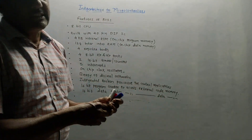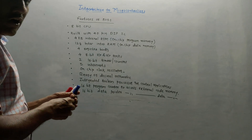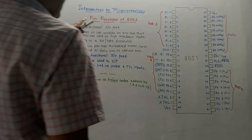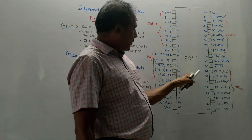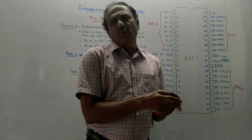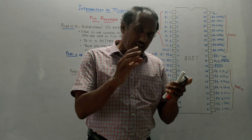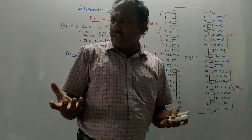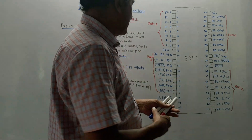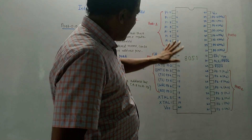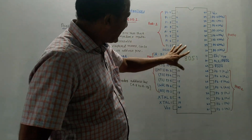Now we will discuss the functioning of each and every pin used for microcontroller 8051. This is the pin configuration for microcontroller IC 8051. From the exam point of view, we can expect questions related to the functioning of any pin — for one or two marks. This is basically a dual-in-package 40-pin IC, with pin numbers 1 to 40 on both sides.